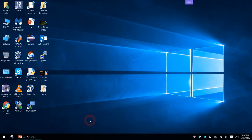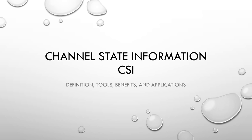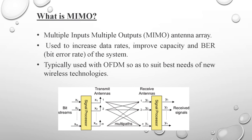Hello everyone, this is Mustafa Sadiq. Today I will talk about something called channel state information, which is one of the features of modern wireless communication technology. It started to show up in wireless communications after the release of the 802.11n standard from the IEEE after the year 2009.